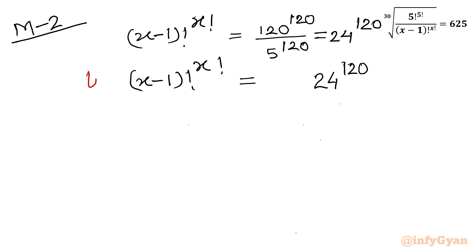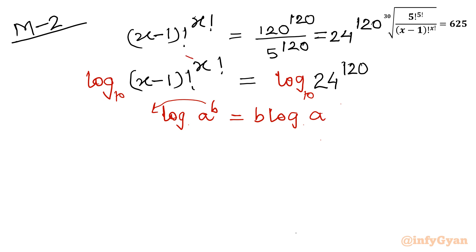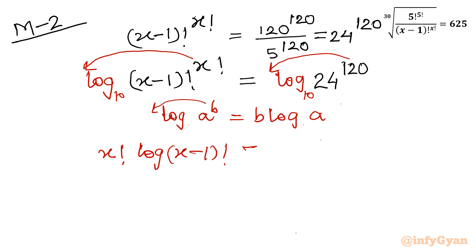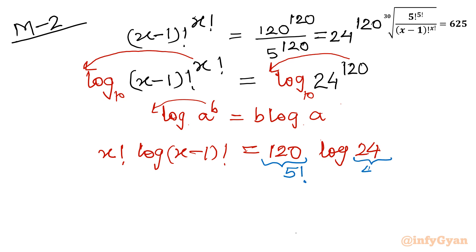Using the logarithm property log a power b equals b times log a, we bring down the exponents. So: x factorial times log of x minus 1 factorial equals 120 times log 24. Since 24 is 4 factorial and 120 is 5 factorial, we can write: x factorial times log of x minus 1 factorial equals 5 factorial times log 4 factorial.